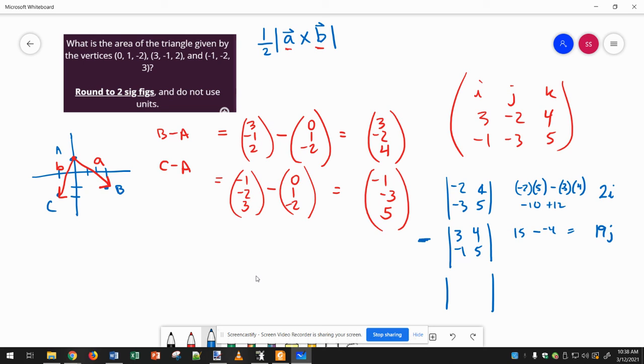And then the K column, we ignore. So we get 3, negative 2, negative 1, negative 3. So this one's got lots of negatives. 3 times negative 3, I'm going to write all these down, minus negative 1 times negative 2. That's negative 9 minus 2. That's negative 11K. So that's A cross B. That's this part.